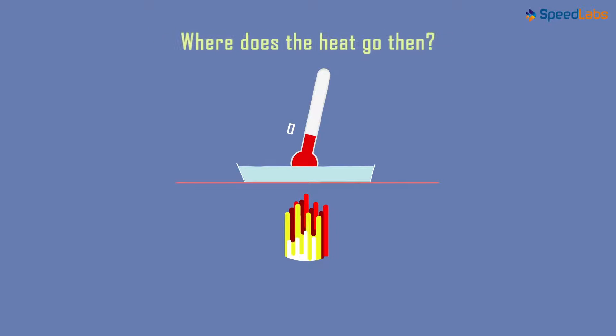In our last video, I left you with an important question. What happens when we supply heat to a solid? The solid melts and gets converted into liquid, but what we saw is that the temperature of the substance doesn't rise. Where does the heat go then?